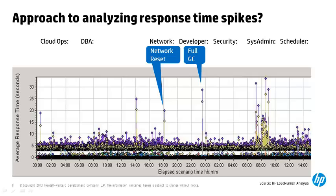Agile teams seek to expose the root causes even though it's someone else's problem. They tend to seek an integrated and comprehensive approach across the organization, because that's what it takes to keep systems stable and controlled. This is why Agile teams often assemble an integrated set of logs from all servers impacting a service.